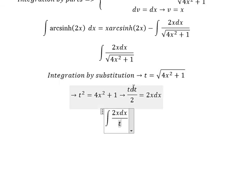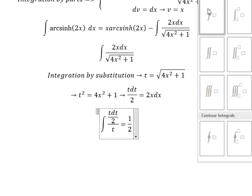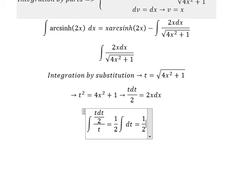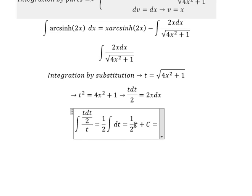We substitute 2x dx for tdt/2. The integral of tdt over 2t becomes the integral of dt/2, which equals 1/2·t + C. For t, we need to change back to the square root of 4x² + 1.